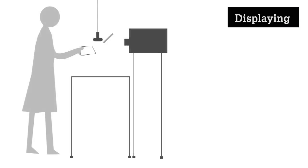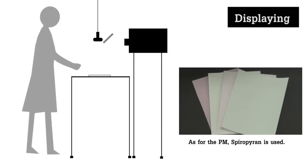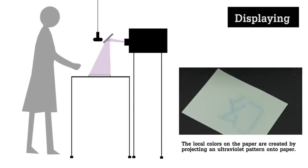Let's move on to the displaying part. The displaying part is composed of paper coated with photochromic material, an ultraviolet light projector, and a camera. As for the photochromic material, Sphero Crayon of four different colors is used. The local colors on the paper are created by projecting an ultraviolet pattern from a UV projector onto paper.